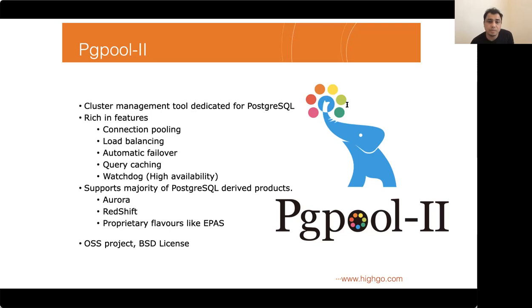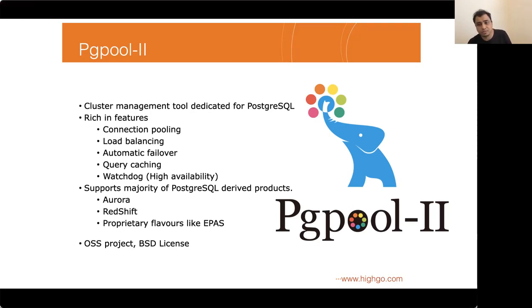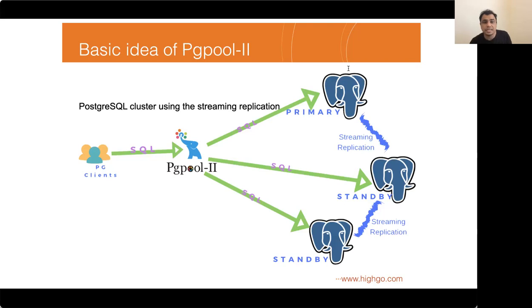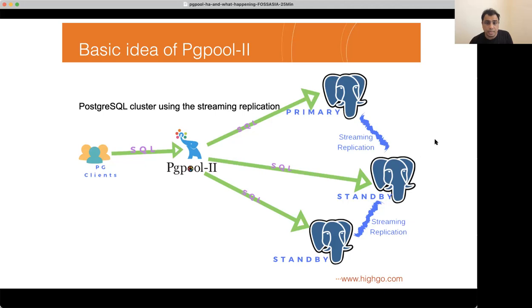pgpool2 has been around for more than a decade. It is a middleware server that sits between the client and database servers. Effectively, all client applications connect to pgpool2 and it routes client requests to one or multiple PostgreSQL servers depending on the availability of the server or the type of the request — write requests go to the primary only, and read requests are load balanced.